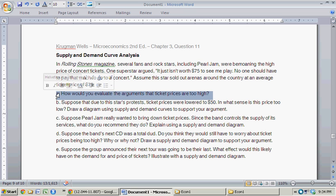So question A, how would you evaluate the argument that ticket prices are too high? First off, let's assume that there wasn't some unmet demand. So let's say that the $75 ticket price was the competitive equilibrium price. That is to say the price in which the supply curve met the demand curve. So at $75, the quantity demanded equals quantity supplied. There's no additional people wanting to purchase tickets.